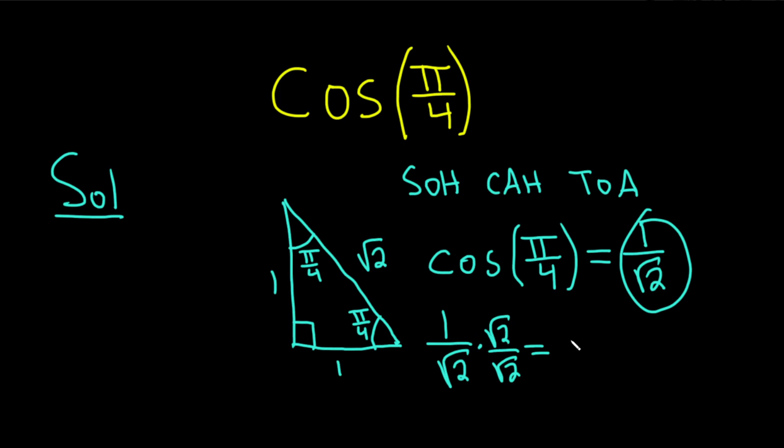And then 1 times the square root of 2 is the square root of 2. And then the square root of 2 times the square root of 2 is 2. So this is a better answer, so I'm going to write it like that. So the square root of 2 over 2.